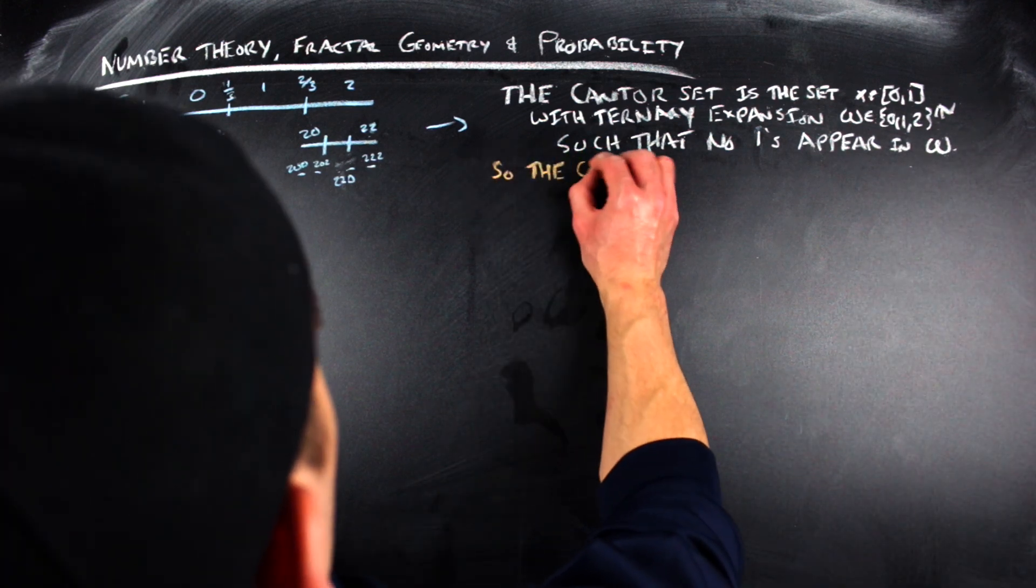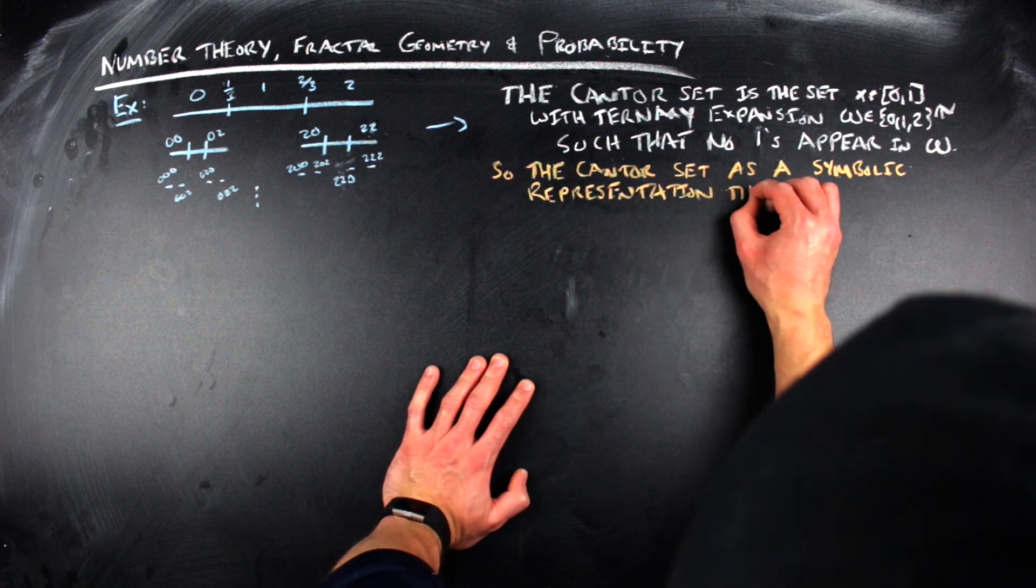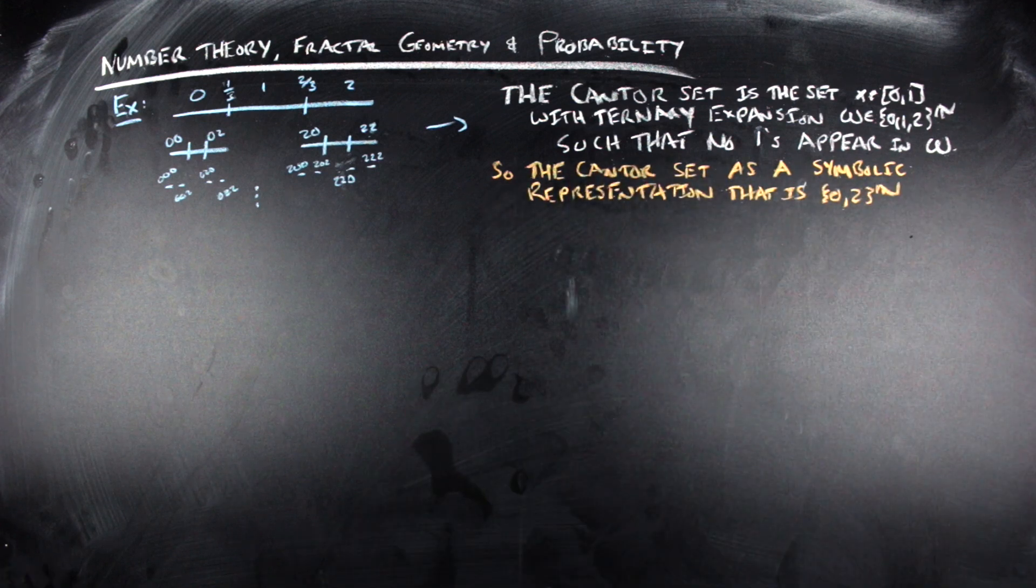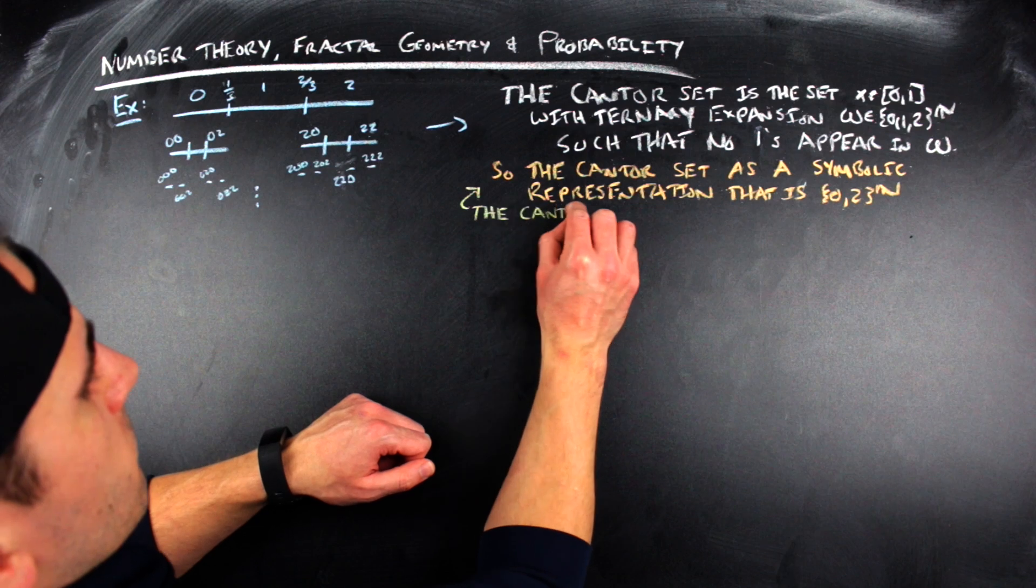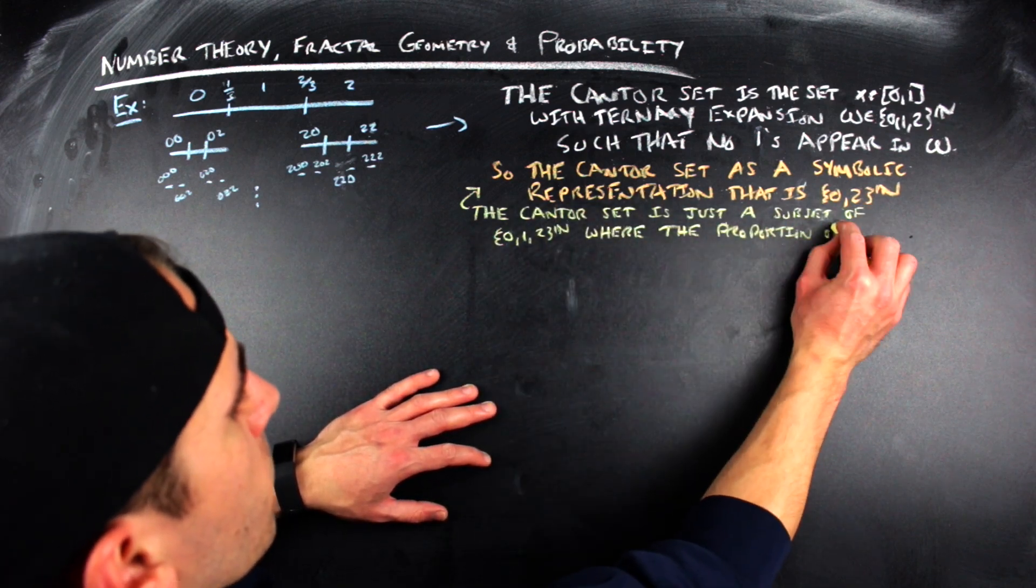Another way to view the Cantor set is that the Cantor set is just these ternary expansions, or these sequences of zeros, ones, and twos, where the proportion of ones is zero and you let the proportions of zeros and twos vary.